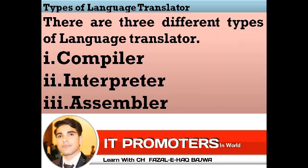There are three different types of language translators. The first one is compiler, the second one is interpreter, and the third one is assembler. We will discuss each one in detail.